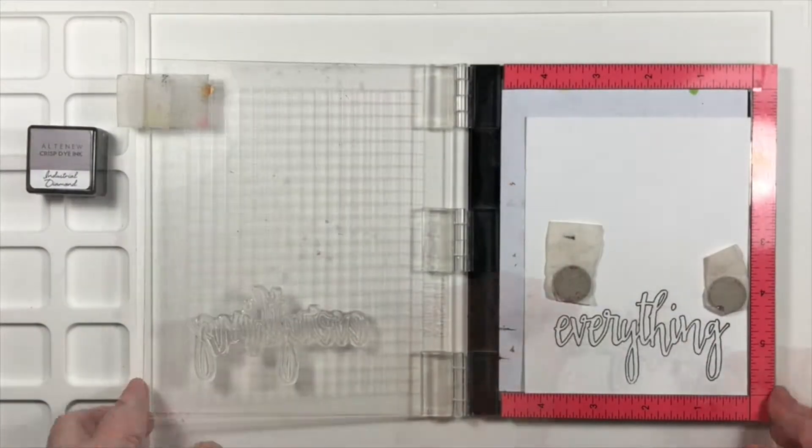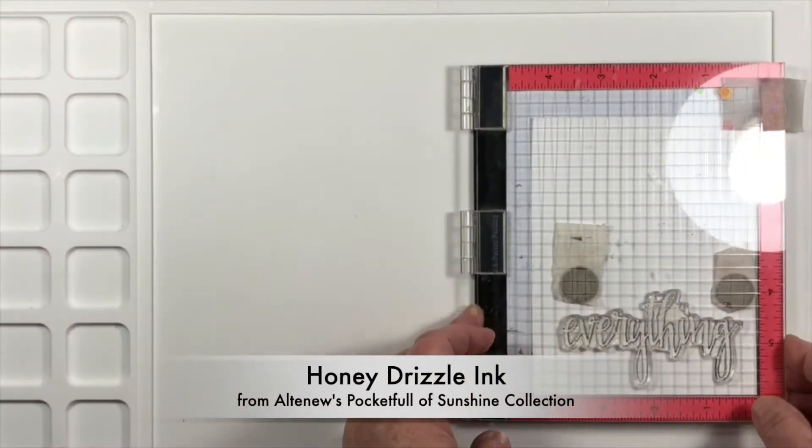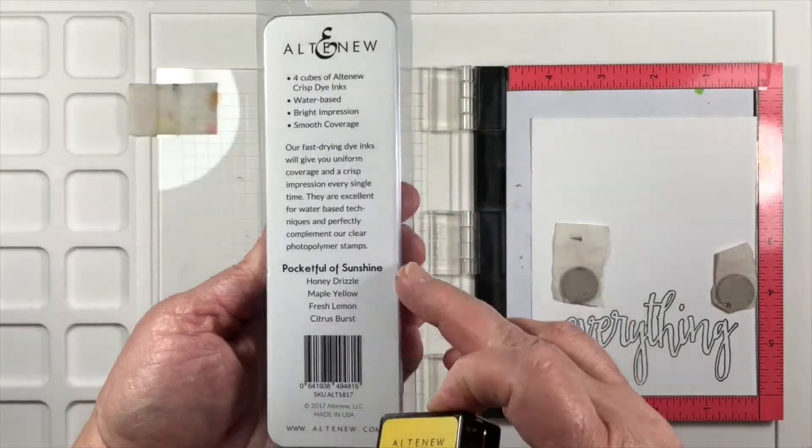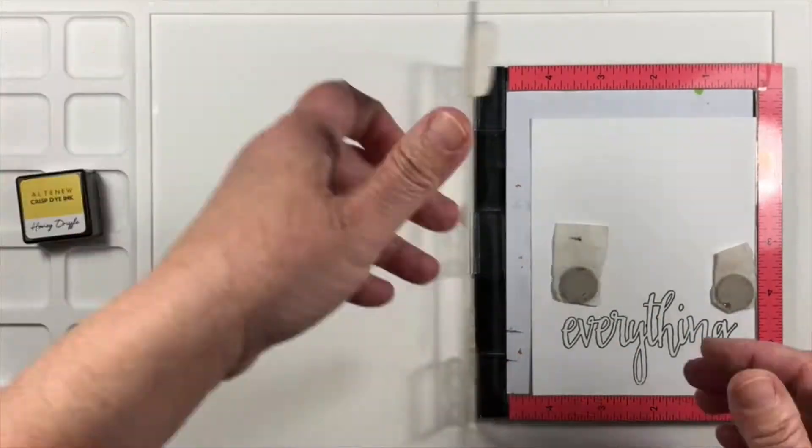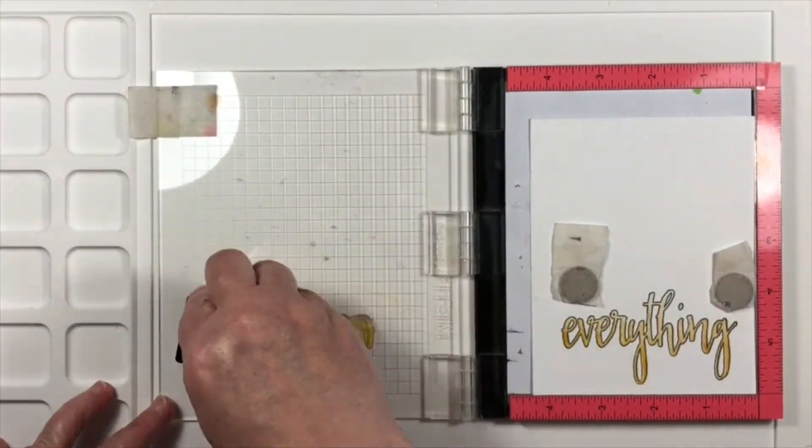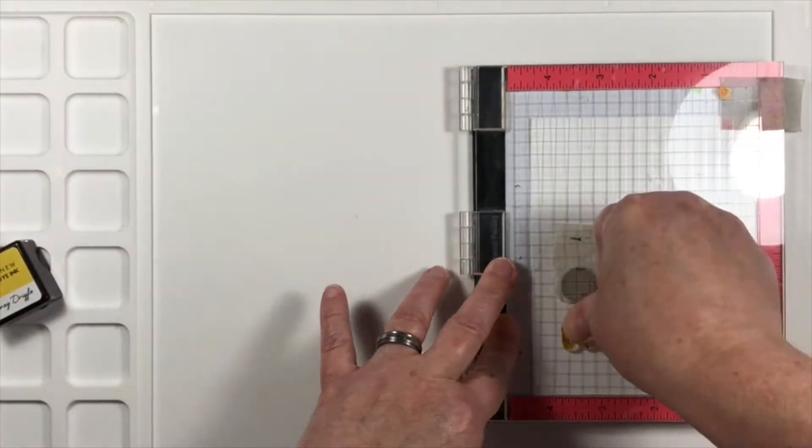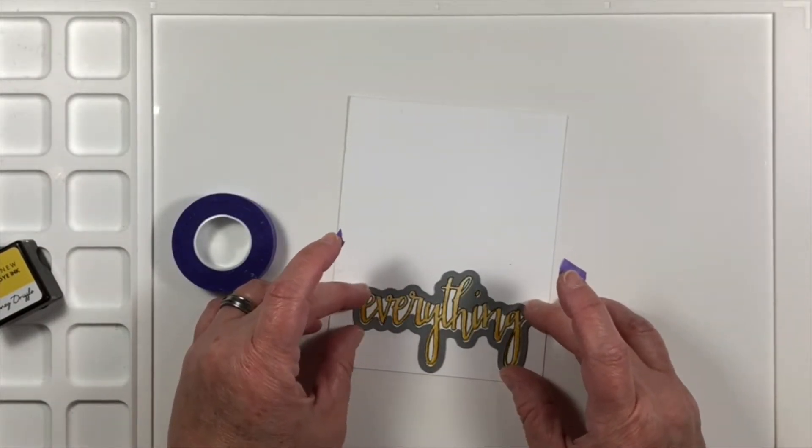Once I have that in place then it's easy for me to be able to take the filling portion and line it up, close the door of the Mini Misti and then there you go. It lines up so easily. It's perfect. So I'm using two layers of ink here just to make sure that this sentiment will stand out really well.